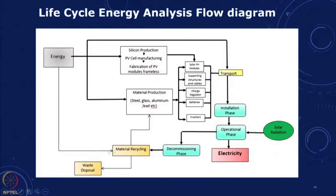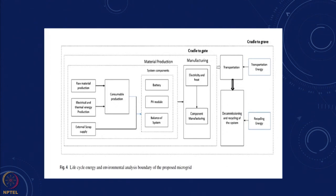A schematic of the full system covers silicon production, PV cell manufacturing, fabrication of modules and frames, the materials involved, the batteries, the installation phase, the operating phase, and then material recycling and waste disposal. In this study, we concentrated on the cradle-to-gate boundary and did not add the waste disposal phase. To do a full cradle-to-grave analysis, we would also need to include decommissioning, recycling, and transportation at end of life.